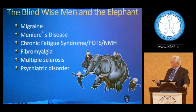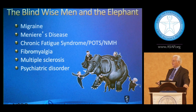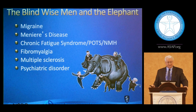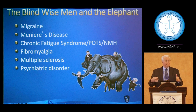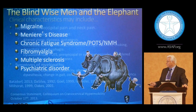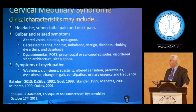I like to analogize the problem to that of blind wise men and the elephant. You go to a headache clinic — patients are described as having migraine. An ENT person sees them — it may be Meniere's disease. The general physician may focus on chronic fatigue, fibromyalgia in the rheumatologic groups, multiple sclerosis, and inevitably psychiatric disorders. We used to say in some of these cases you see four neurologists and a psychiatrist before the diagnosis is made. In cervical medullary syndrome, the clinical characteristics include headaches, suboccipital pain, and neck pain — probably 80% or more.